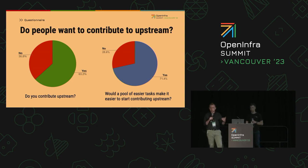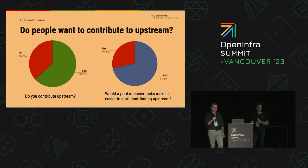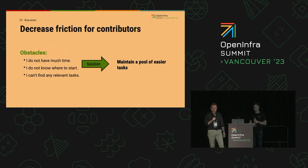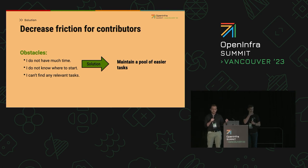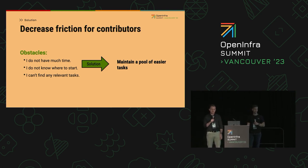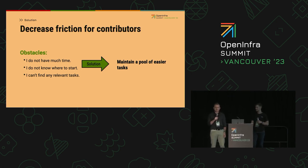But before that — can you think of any obstacles that might prevent people from contributing upstream? We asked those 36 people why they said no and we found three common obstacles. The first one was people don't have enough time — they are too busy with work that isn't that much upstream focused. The other obstacle was that they don't know where to start. And the third one: they just can't find any task which would be relevant for them.